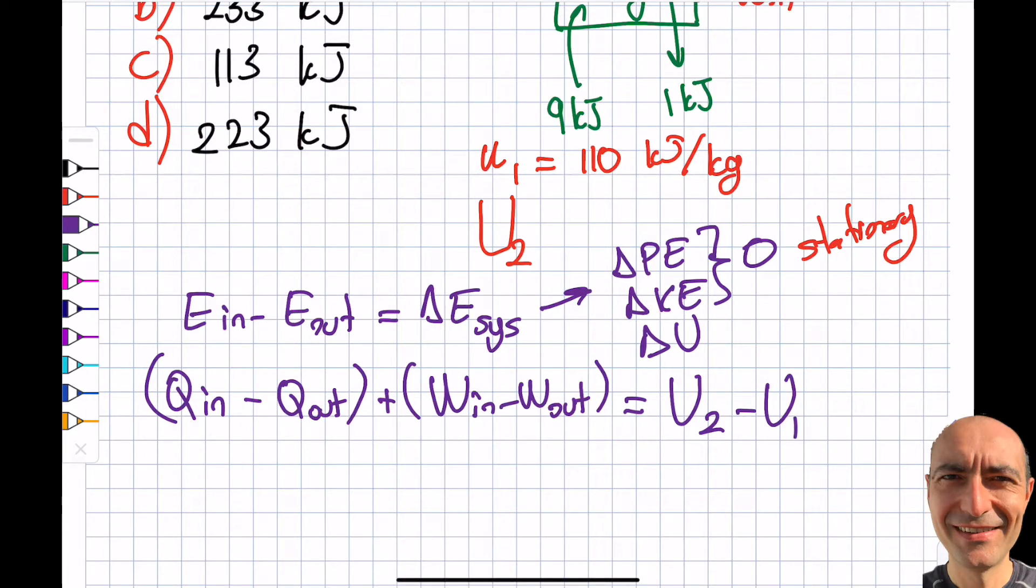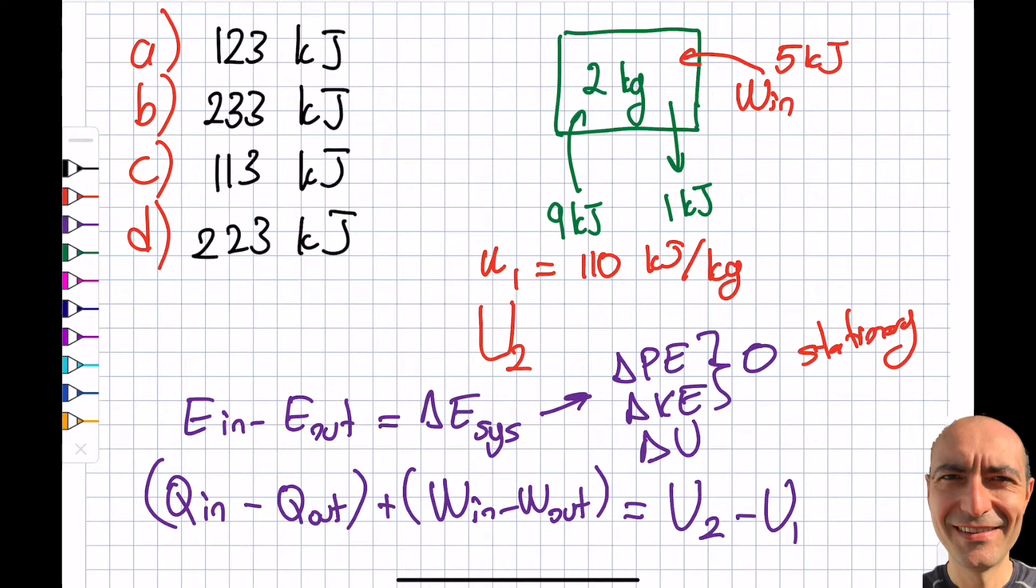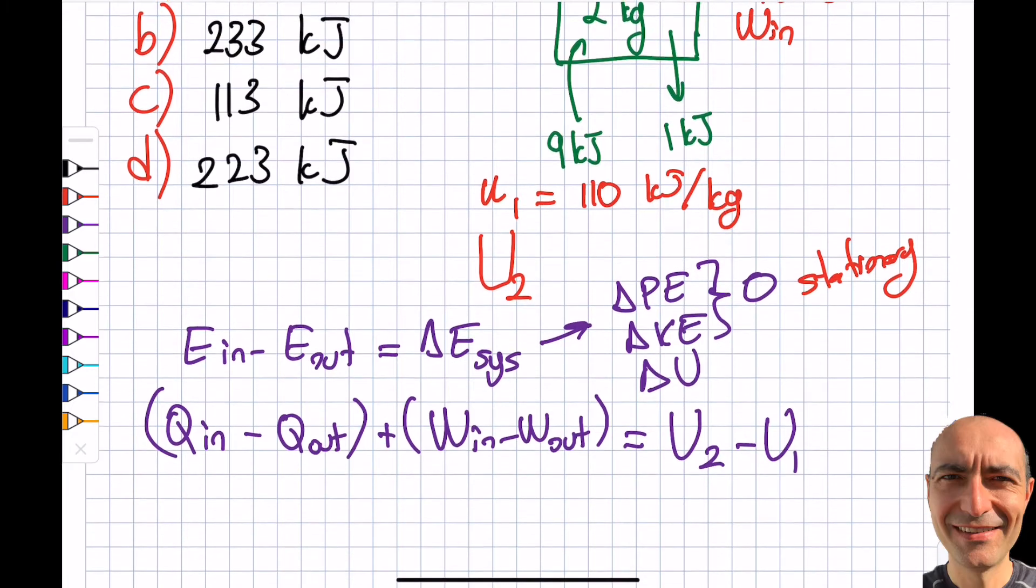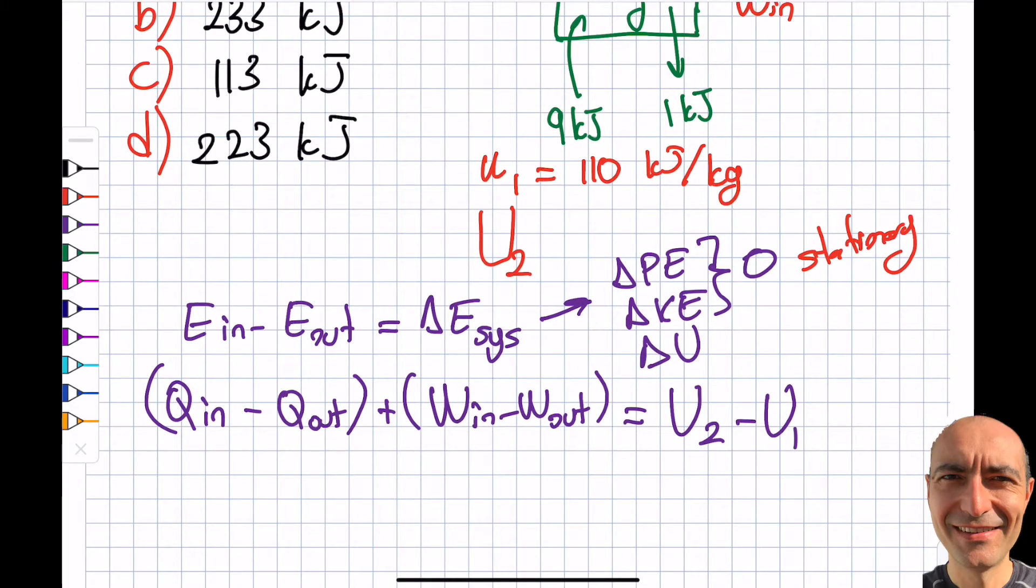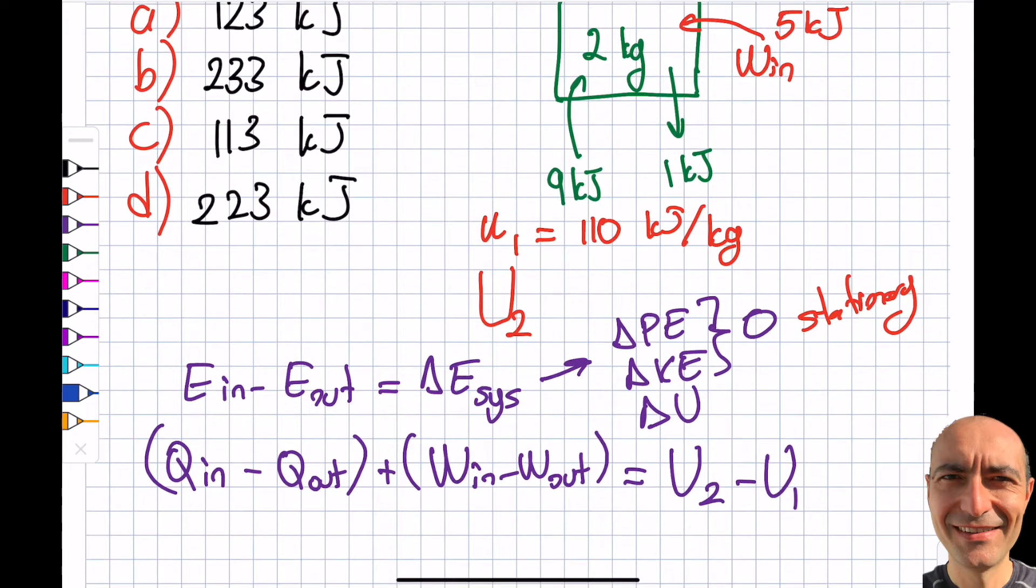Then my Delta U will be simply U2 minus U1. I simply go out and use the information that I know. Q in, looking at this system, is going to be 9 kilojoules entering my system as heat transfer, 1 kilojoule is leaving my system as heat transfer.